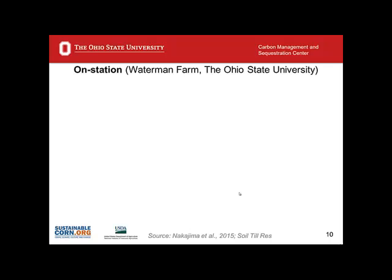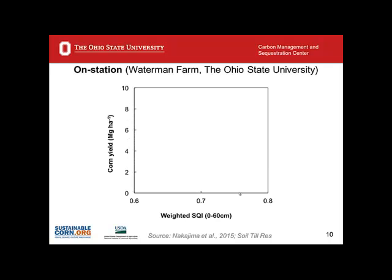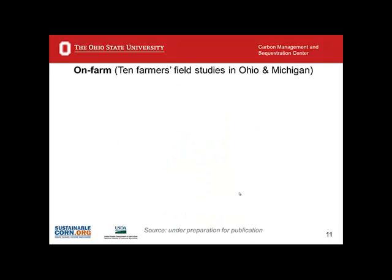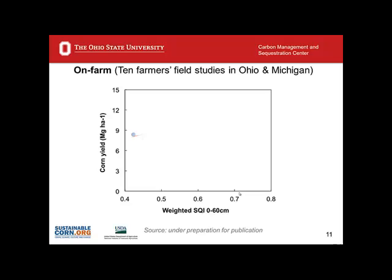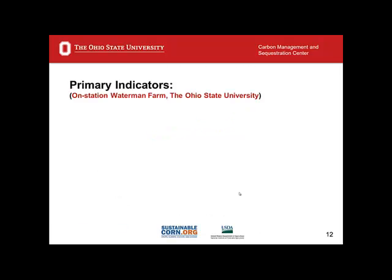In terms of the on-station work done at Waterman Farm at Ohio State University, the weighted soil quality index to 60 cm depth is related to corn grain yield in a linear fashion, with a regression correlation coefficient of 0.62, significant at the 0.5% level of probability. Under on-farm conditions, the correlation coefficient is even better, with a value of 0.75. This shows that corn yield, both under research conditions and farm conditions, is related to the soil quality index.